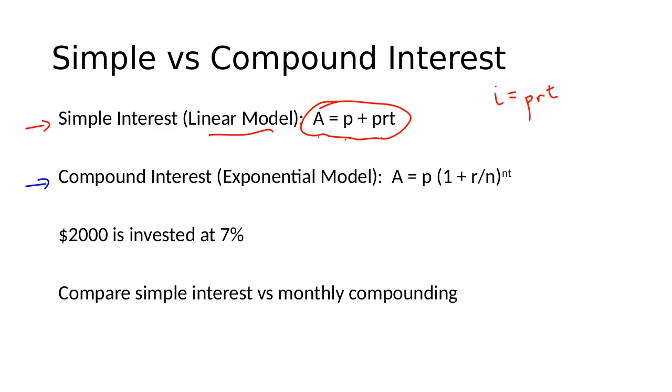Compound interest, the future value, is given to us by a formula that does have variables in the exponent. And since there are variables in the exponent, compound interest follows an exponential model.